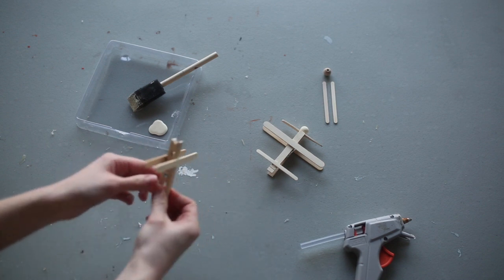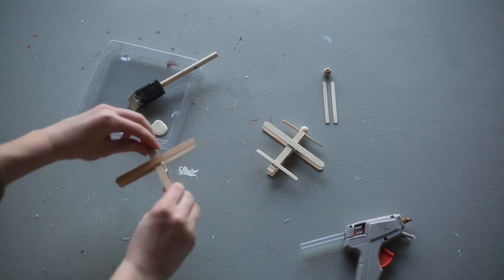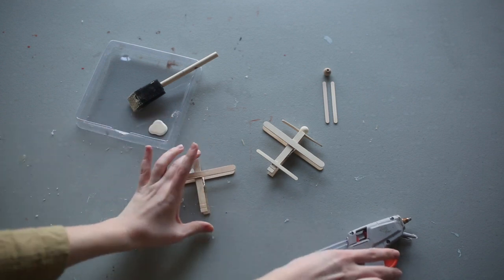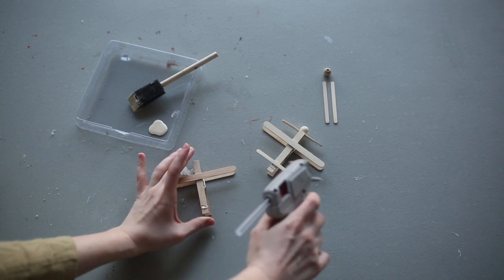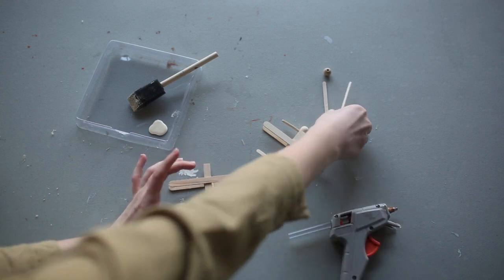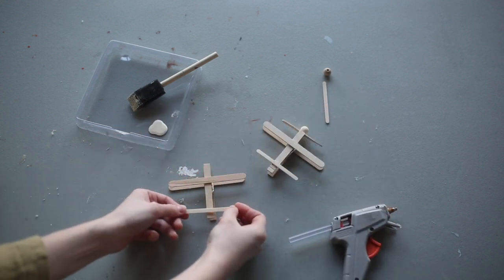Okay, next we're going to flip it back over and we are going to apply a line of hot glue to the end right on the second line. And we're going to attach one of these smaller popsicle sticks right across there.